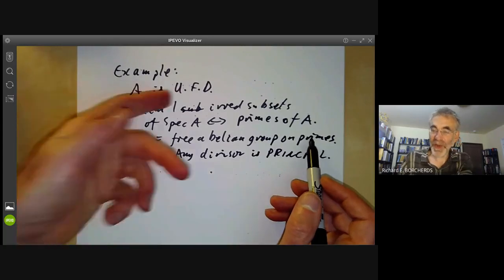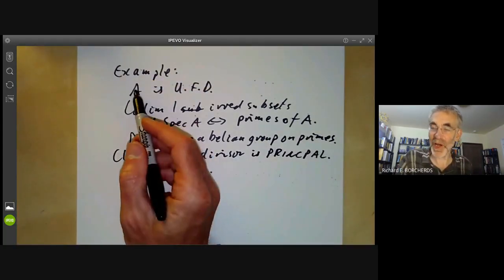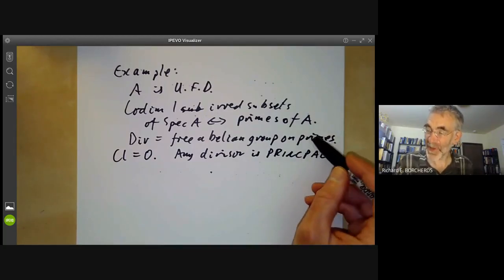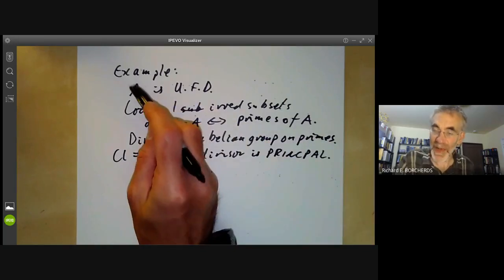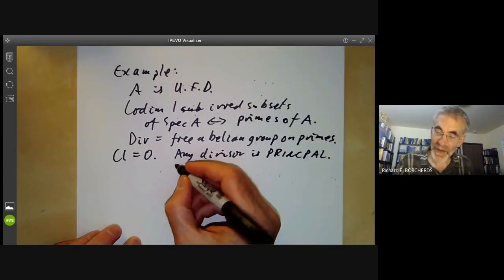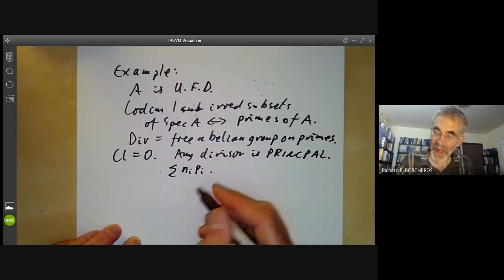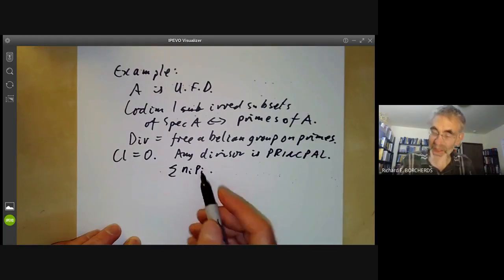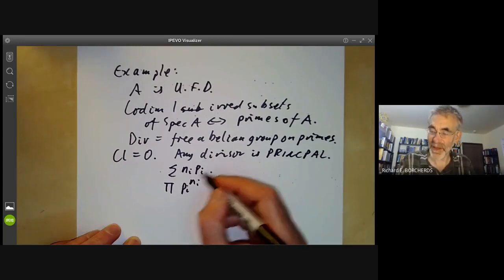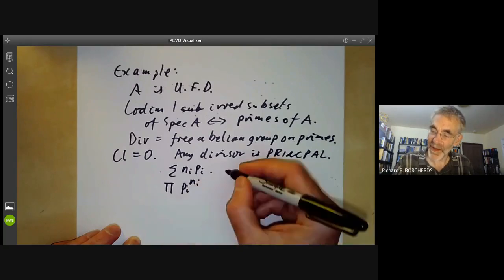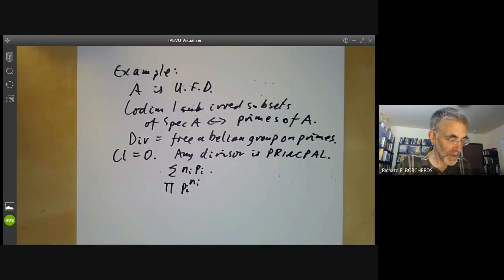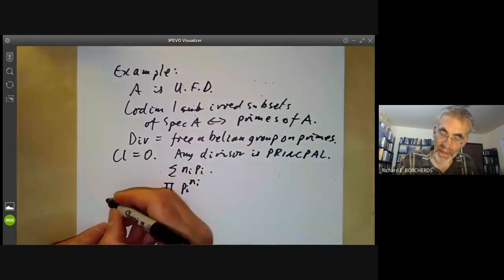If we've got a prime, then by definition of a unique factorization domain, there's some prime in A corresponding to it. The codimension one prime ideals correspond to prime elements of the ring A. And if you've got any divisor sum of N_i P_i, then this is principal because you just take the product of P_i to N_i, where here P_i is the prime ideal and here P_i is the element generating the prime ideal.